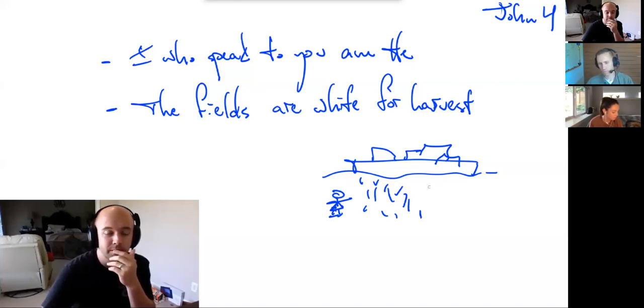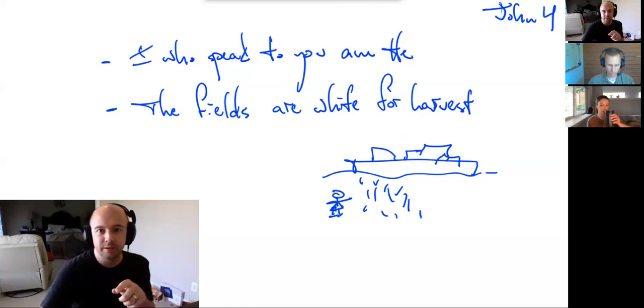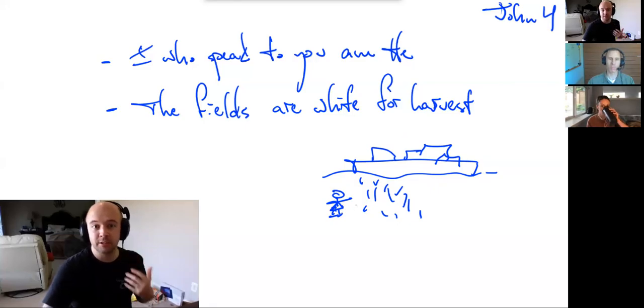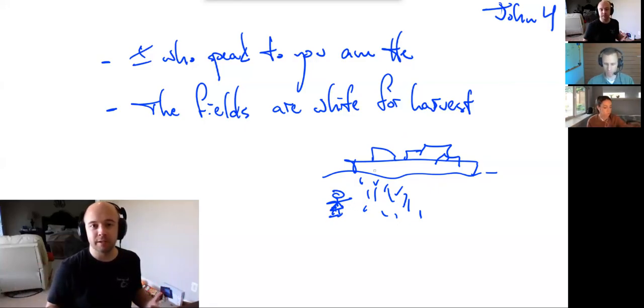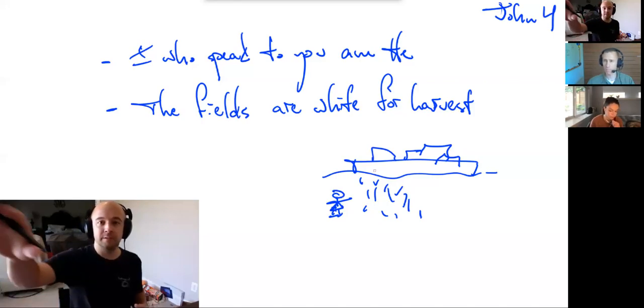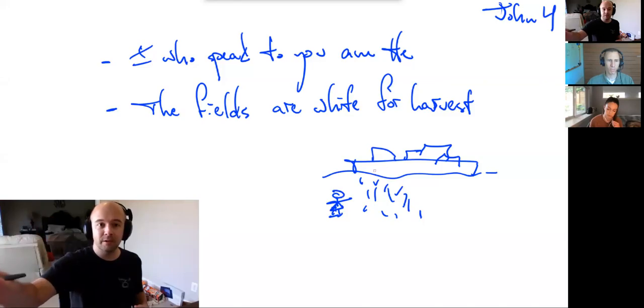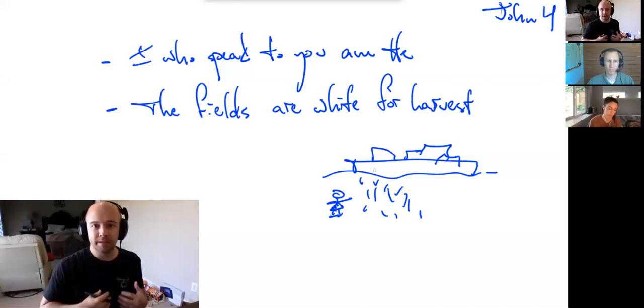For me, something that stood out so much was in the latter part of the chapter when he says, I tell you, open your eyes and look at the fields. They're ripe for harvest. Even now the one who reaps draws a wage and the harvest a crop for eternal life, so that the sower and the reaper may be glad together. Really what he's talking about here is the people that are approaching from far away.